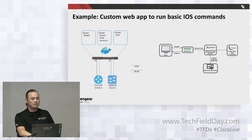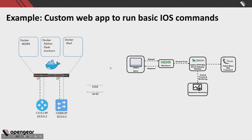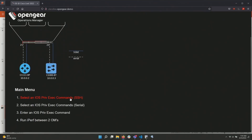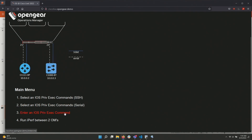Here's an overview of the app we're running. It's a basic Python Flask with Gunicorn setup, hosted on a Docker container on one of our OMs. The OM has a serial connection and an IP/Ethernet connection to a Cisco ISR and a small Cisco Catalyst 1000, so it gets both serial access and IP access. There's a main menu with basic commands using SSH, a serial selection if the device is only accessible locally, and a manual command entry option in case what you need isn't in the predefined list.